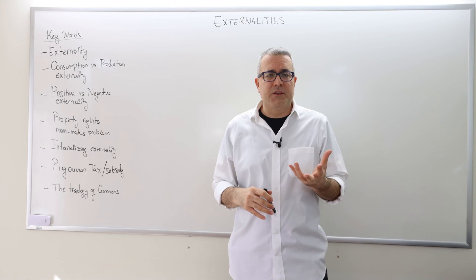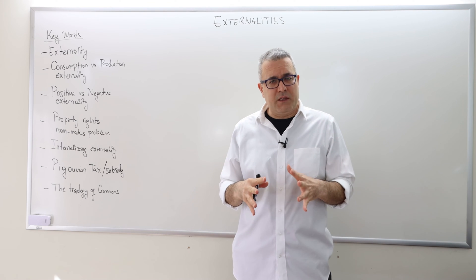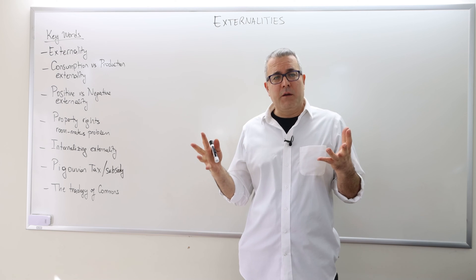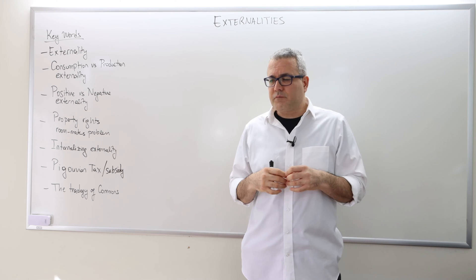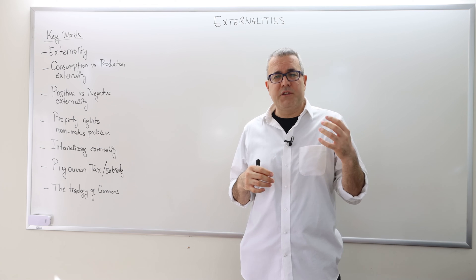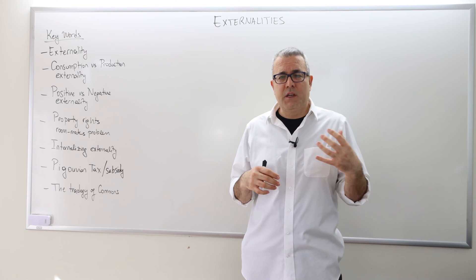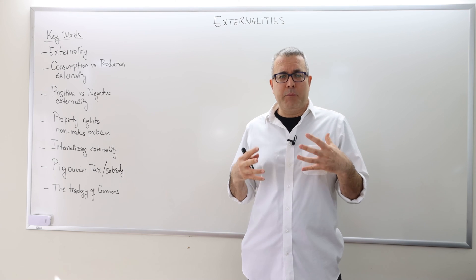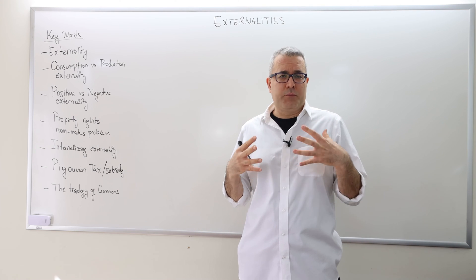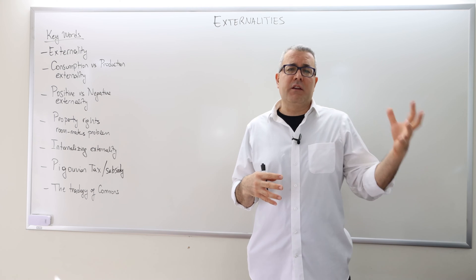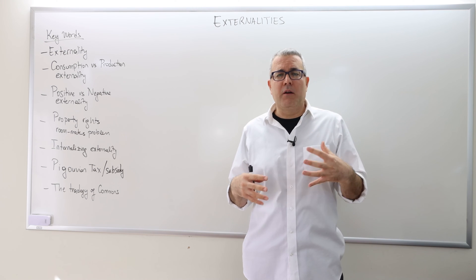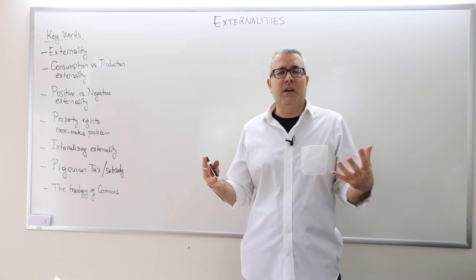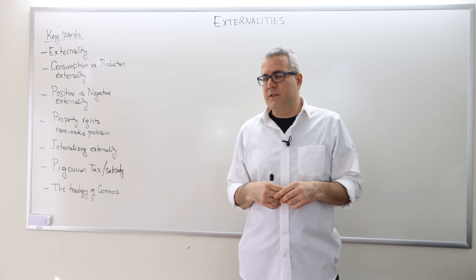So what does externality mean? For this course, at the very least, externality is basically this: in a market environment there are a bunch of agents. Some of the agents' actions and choices influence — impact — the well-being, the payoff, the utility, or the profit of the other agents in the economy. So the agents are not independent individuals in some sense.